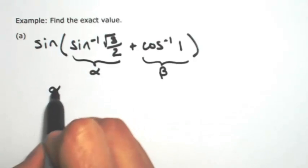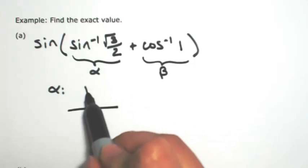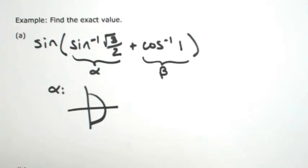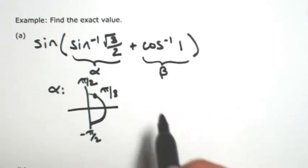So in the case of alpha, since we're talking about the inverse sine, I can only be in the first or the fourth quadrant, which is from negative pi over 2 to pi over 2. So I'm looking for where the y-coordinate is square root of 3 over 2, which is pi over 3.